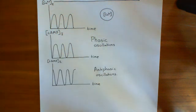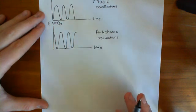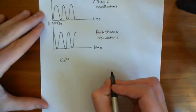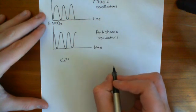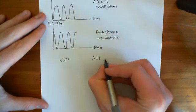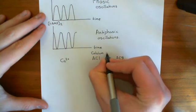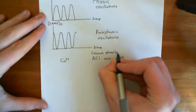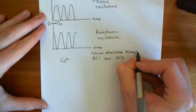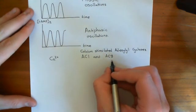In this video we're going to look at the mechanisms underlying both phasic and antiphasic oscillations — how calcium oscillating links to cyclic AMP oscillating either in phase or out of phase. We'll begin by looking at how cyclic AMP can oscillate in phase with calcium. When calcium goes up, there are certain adenylyl cyclases which are stimulated by calcium: adenylyl cyclase 1 and adenylyl cyclase 8 — the two calcium-stimulated adenylyl cyclases.